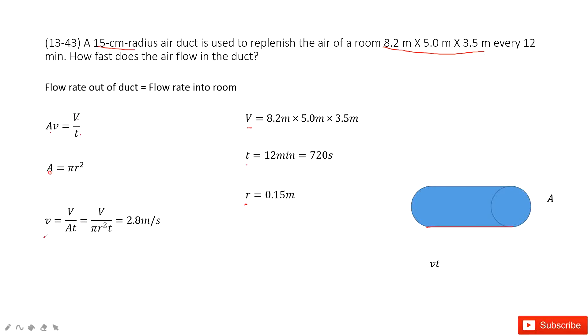So velocity v equals capital V volume divided by A times T, and then input all the known quantities. We get the final answer there. Thank you.